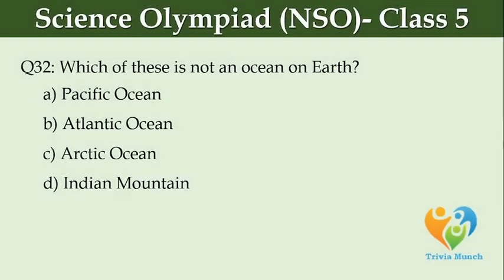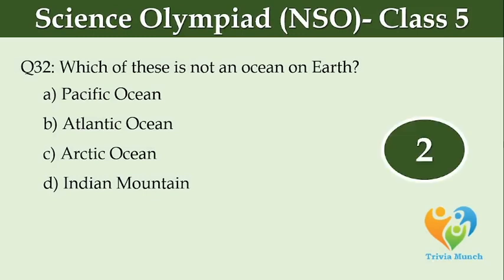Which of these is not an ocean on Earth? Option A: Pacific Ocean, Option B: Atlantic Ocean, Option C: Arctic Ocean, Option D: Indian Mountain.